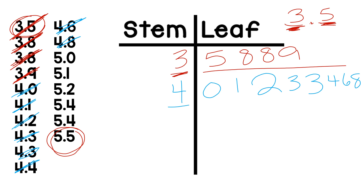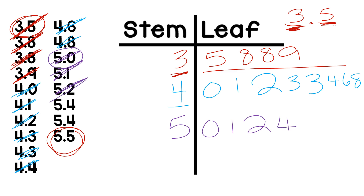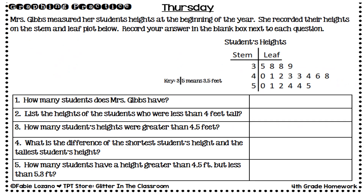I have one more stem row and that is my five. The five in the stem represents five feet — one student is five feet tall, another is five and one tenths, five and two tenths, two students are five and four tenths, and the tallest student is five and five tenths feet tall. Here are all these numbers on the completed stem and leaf plot.